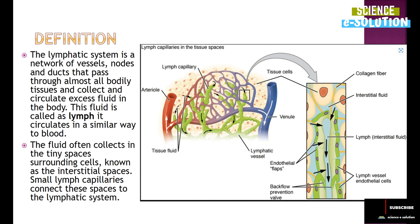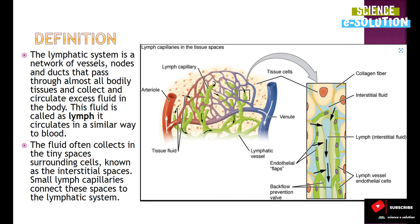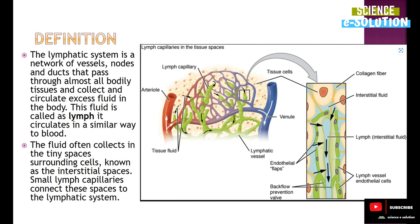Now what is the lymphatic system? As you can see in the diagram, the lymphatic system is a network of vessels, nodes, and ducts that pass through almost all bodily tissues and collect and circulate excess fluid in the body. There are lymph capillaries, nodes, and ducts from which the interstitial fluid circulates in the lymphatic system. This fluid circulating in the lymphatic system is called lymph, and it circulates in a similar way to blood. The fluid collects in tiny spaces surrounding the cells, called interstitial spaces.